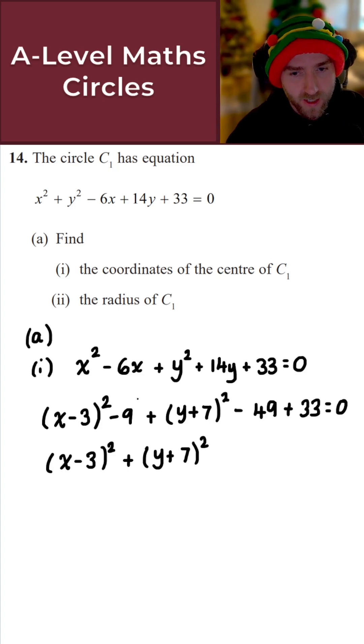So what I get here then is x minus 3 all squared plus then y plus 7 all squared. As we just said then, the minus 9, the minus 49, the plus 33, that simplifies to go as minus 25. So we take that over to the other side. What I get here then is that this is equal to 25.